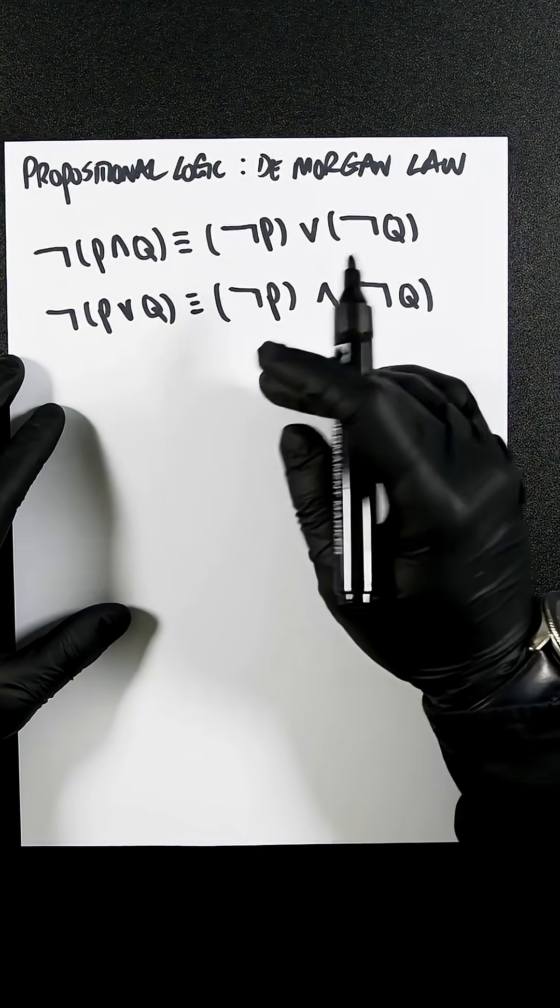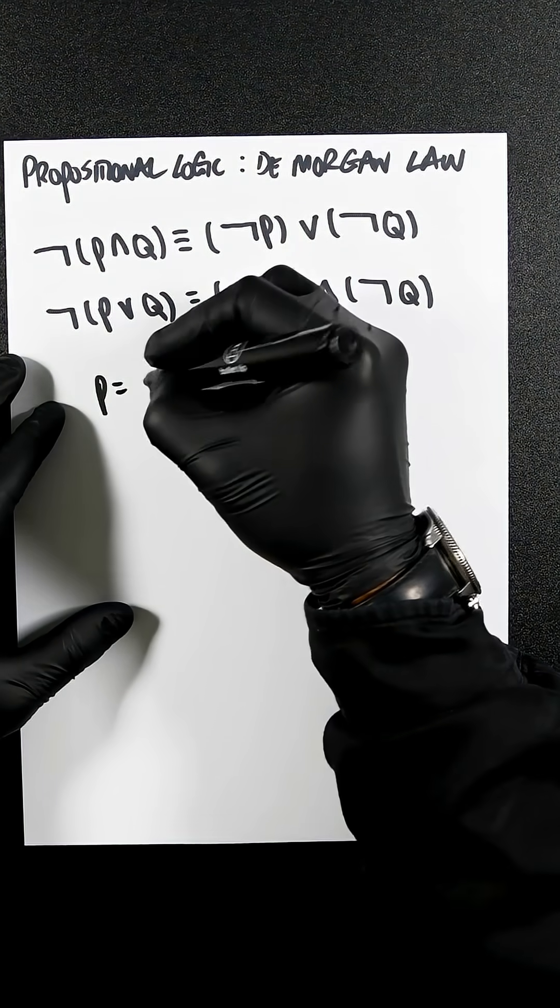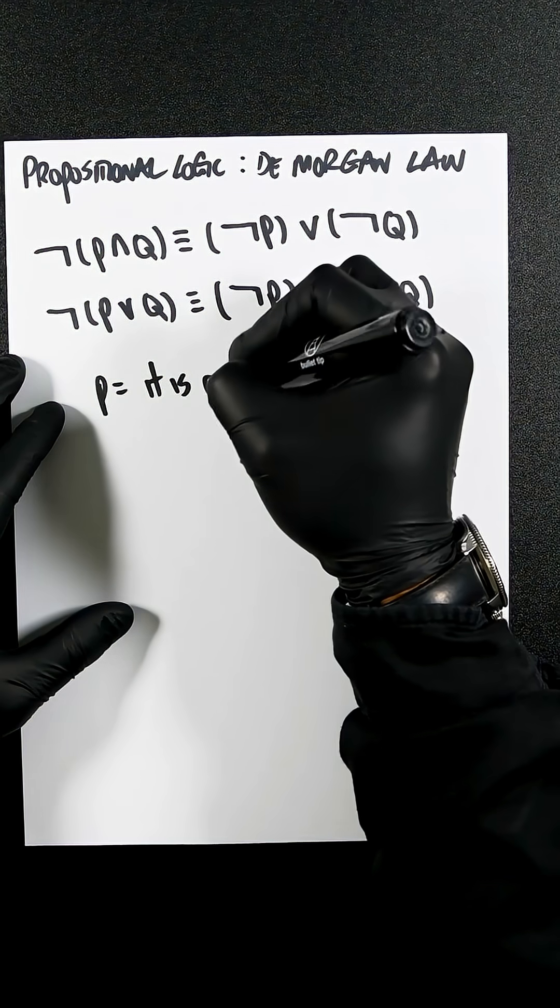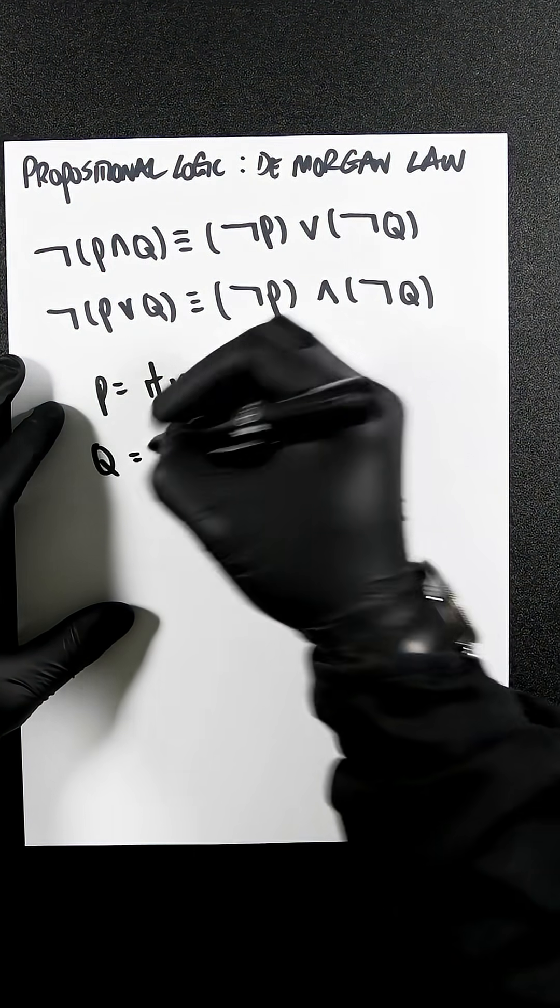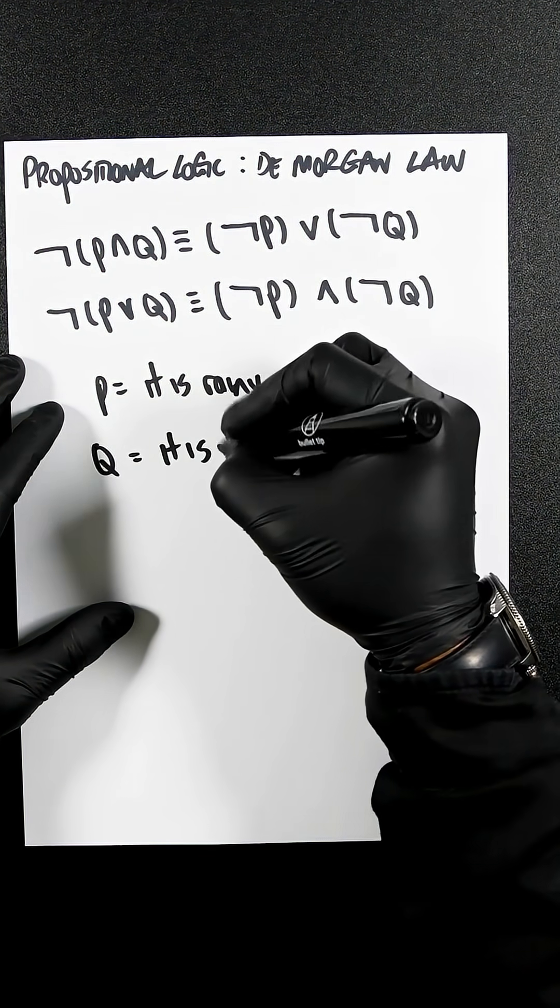So if P is 'it is rainy' and Q is 'it is windy'.